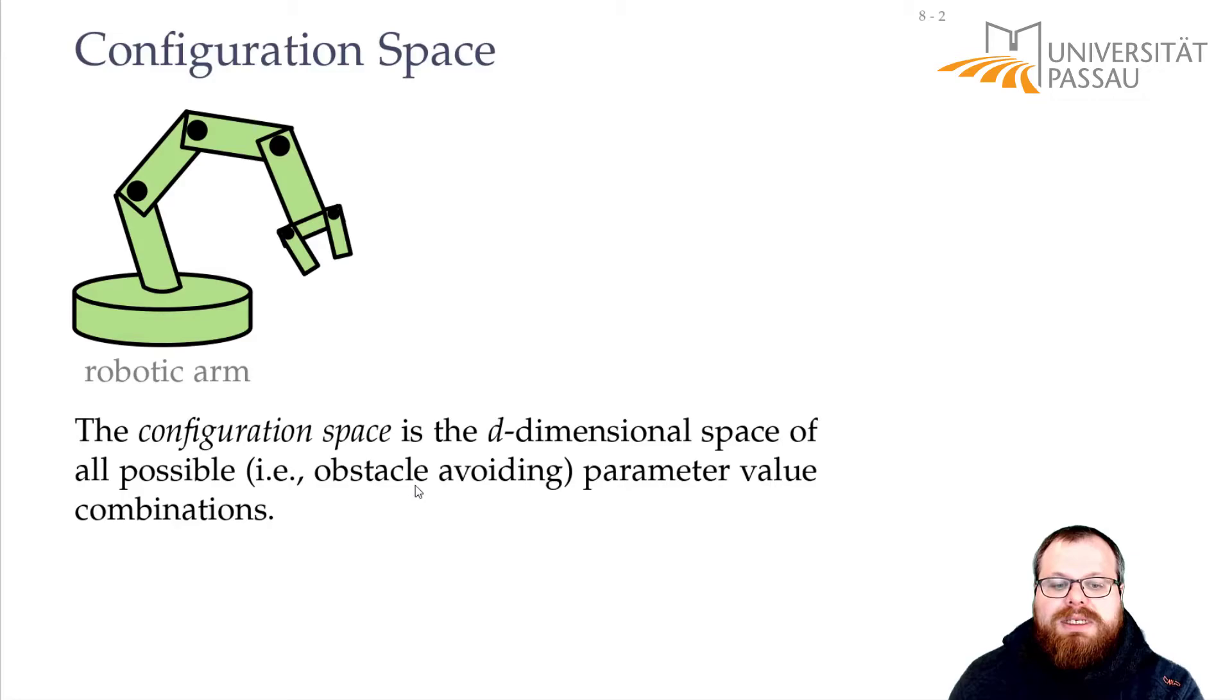That means that if we have our robot here and the obstacle there, that they don't intersect. In order to define that, we have to have a reference point for our robot.